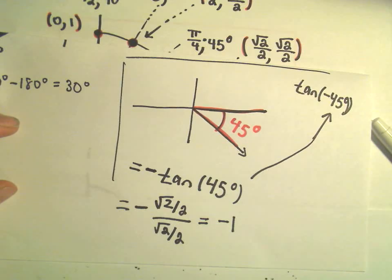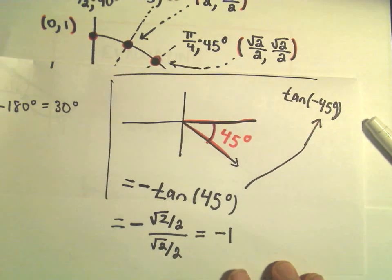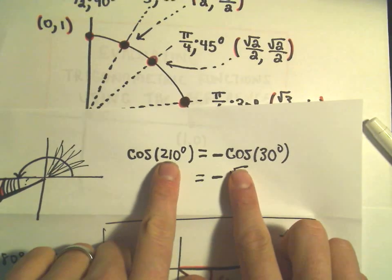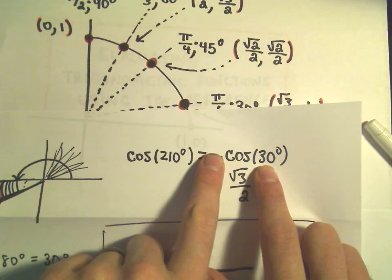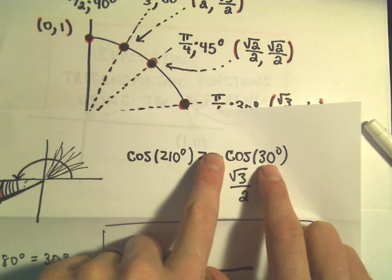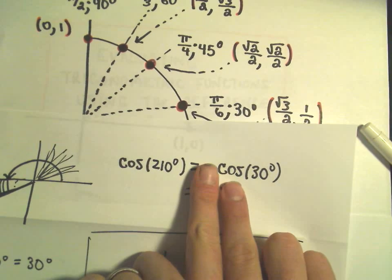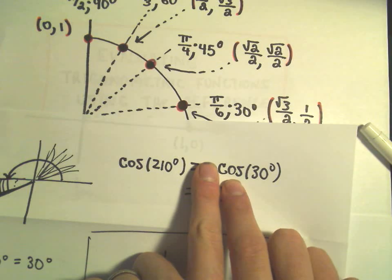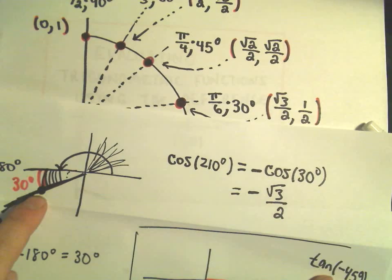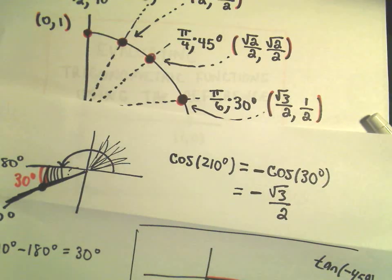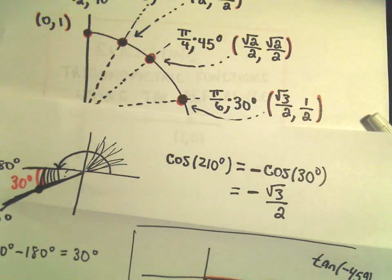So the value of tangent of negative 45 degrees is negative 1. The basic idea is you take the original angle, replace it with its reference angle — which always falls in the first quadrant and gives positive values — and then based on which quadrant you're in, decide whether the result becomes negative or stays positive.